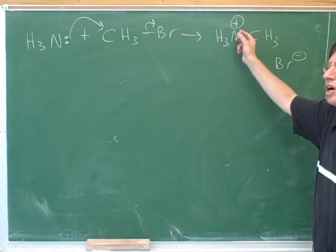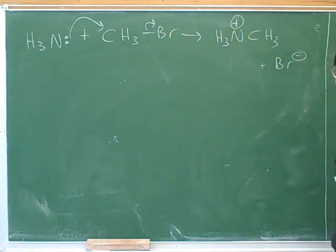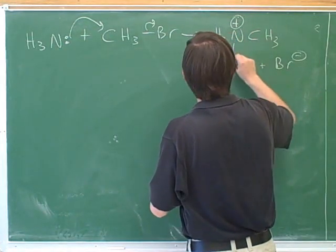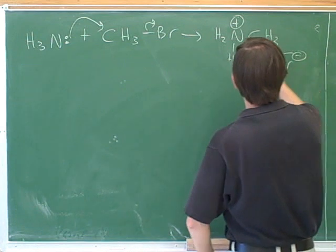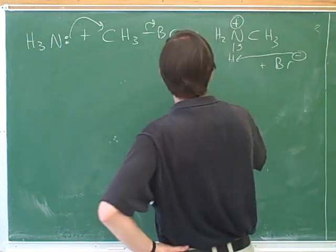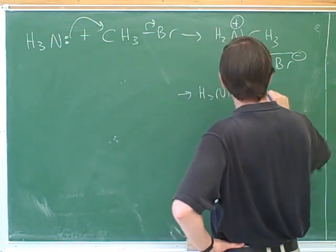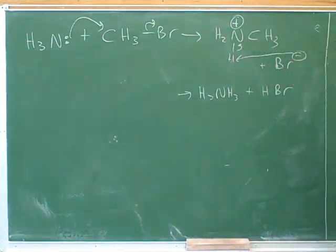Now, oftentimes when we have a positive charge, we want to do another step. So what could happen now? Br minus. Right. Now we could have Br. And that will give us this.